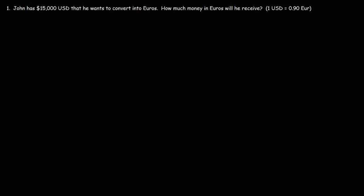In this video, we're going to talk about how to convert currency given the currency exchange rate. In this problem, John has 15,000 US dollars that he wants to convert into euros. How much money in euros will he receive? We're given the currency exchange rate: one US dollar is equal to 0.9 euros. So how many euros is 15,000 US dollars?